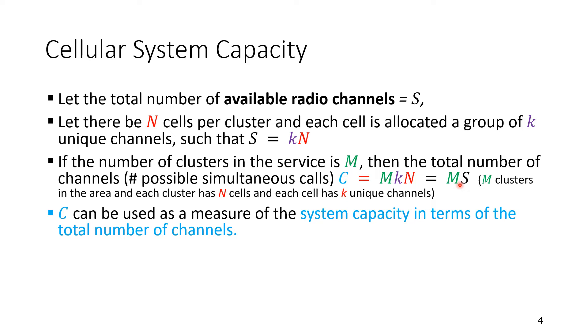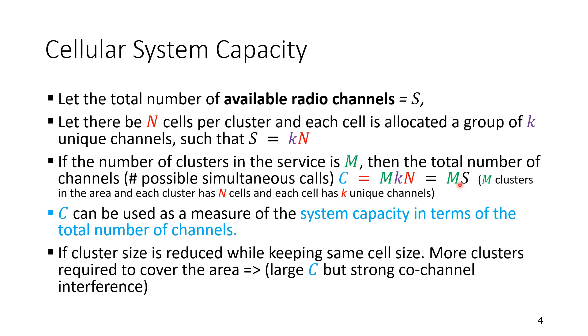C can be used as a measure of system capacity in terms of the total number of channels. It gives you a measure of the capacity of the system. If the cluster size is reduced while keeping the same cell size, we then will have more clusters required to cover the area. We'll get large C because we are increasing M, but of course, we'll have co-channel interference. So there's a trade-off between capacity and interference.